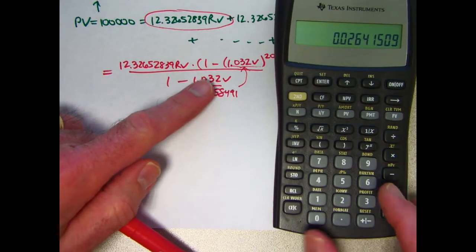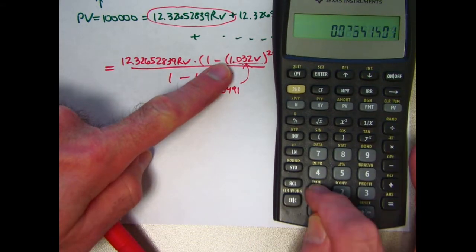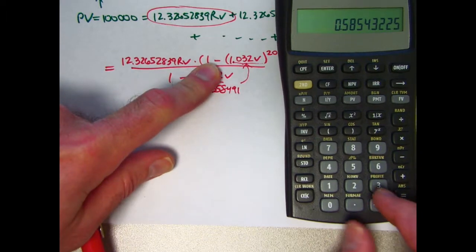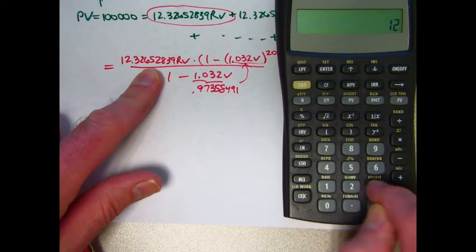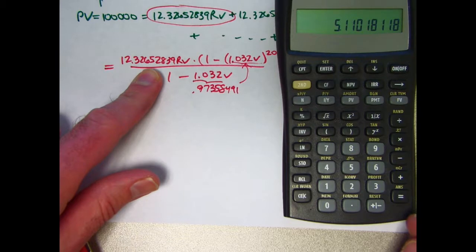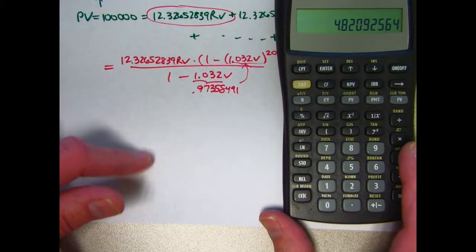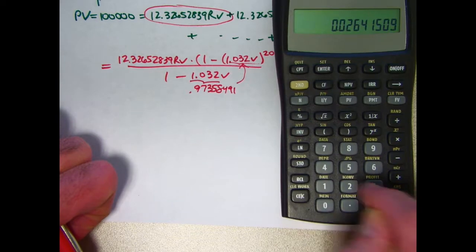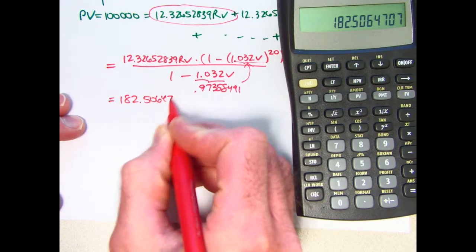Now let's go up to the top. This thing, 0.97358491, was stored in register 1. Recall that from register 1. There it is. Raise it to the 20th power. Subtract from 1. Multiply by 12.32652839. Also multiply by V, which is stored in register 0, times recall 0. And now divide by what was in the bottom, what was in register 2. Divide by recall 2. Looks like we get 182.5064707 times R. Don't forget the R. And the R is what we're going to solve for.